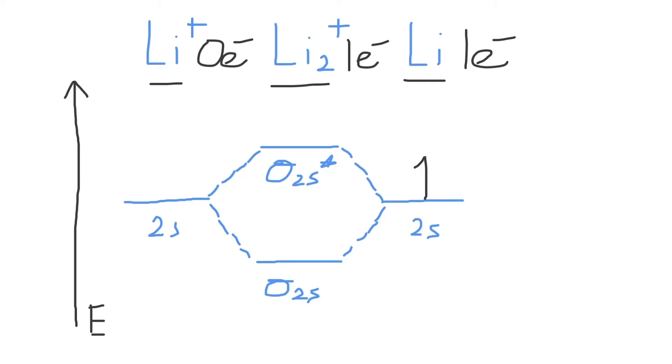And we know this because we start filling the lowest molecular orbitals or energy levels first because of the Aufbau principle. So we will fill in this molecular orbital with one electron. And this is our completed molecular orbital diagram for the Li2 plus ion.